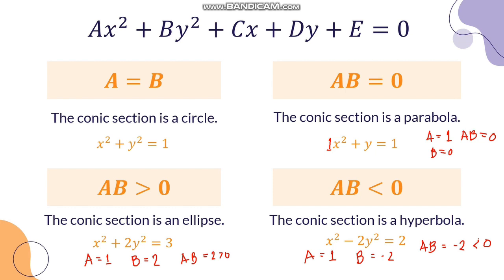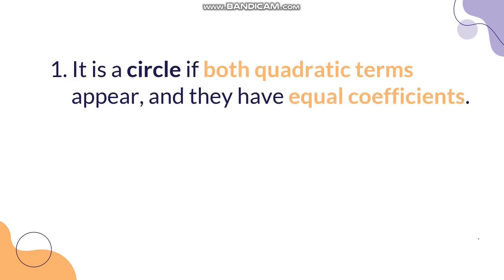That's how we can identify the conic section depending on the given general form — you just look at A and B, the coefficients of X squared and Y squared. There are also additional ways to easily identify if a given equation is a circle, ellipse, parabola, or hyperbola. For a circle, it is a circle if both quadratic terms appear and they have equal coefficients.